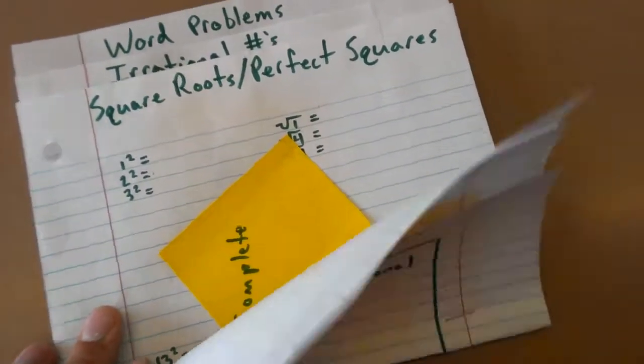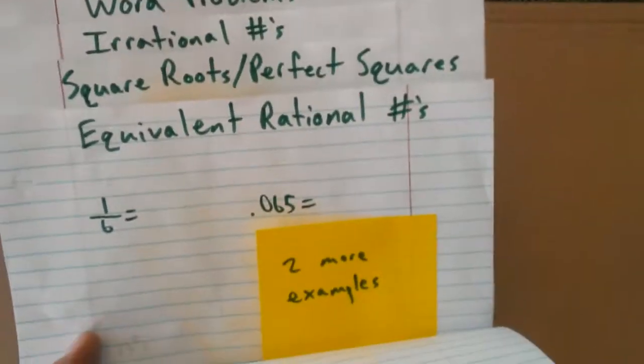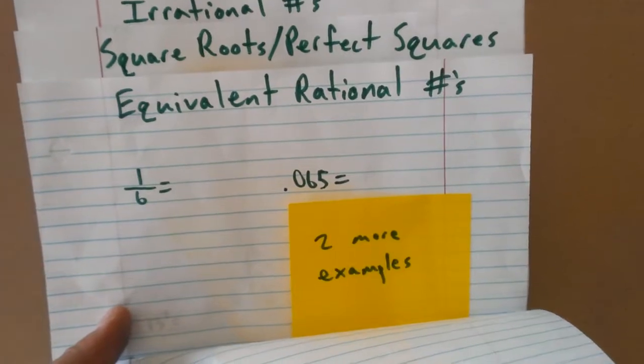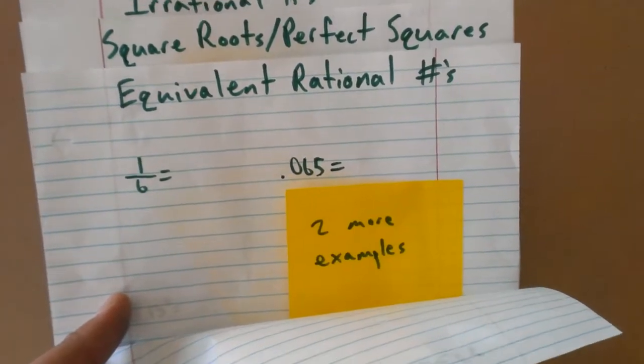For equivalent rational numbers, they need to list the fraction or the decimal and show how to convert from one to the other.